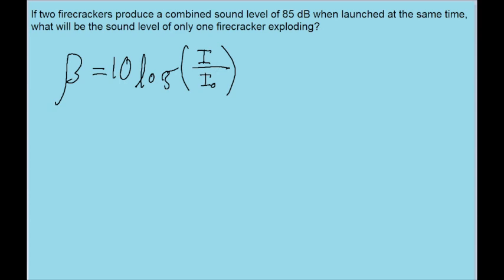If you play around with this in your calculator, what you will find is that whatever the intensities are, if whatever is in the numerator is double what is in the denominator, so if this ratio is equal to 2, then the sound level that you get is 3 decibels.